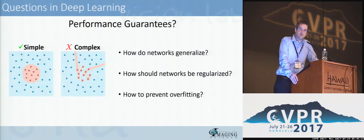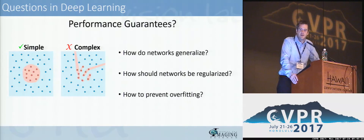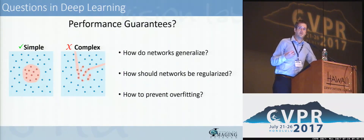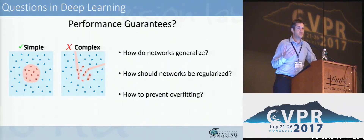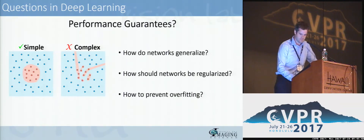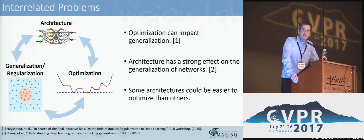Beyond that, can we guarantee anything about the performance of neural networks? For example, how do neural networks generalize to new data? Are there ways we should be regularizing neural networks to improve their performance? Are neural networks learning appropriate decision boundaries, or perhaps very complicated decision boundaries that might suggest they're overfitting? All these questions are actually somewhat interrelated in our view.